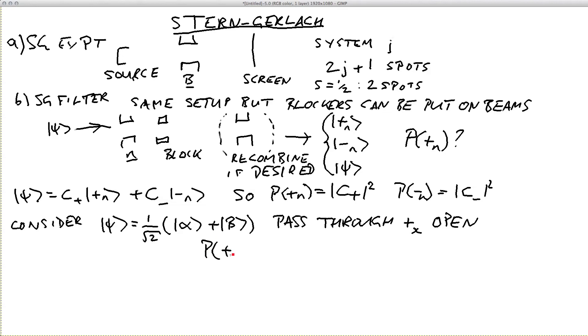The probability of plus x is equal to one, as the eigenstate plus x is given by one over root two times alpha plus beta.